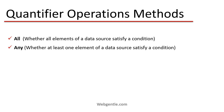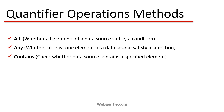Next is the 'Any' method. Any is used to check whether at least one element of a data source satisfies a condition. If any element satisfies the condition, the return type will be true; otherwise, if no element satisfies the condition, the return type will be false. The last one is the 'Contains' method. Contains is used to check whether the data source has some element matching a given value — we provide the value and check whether the data source contains it or not.